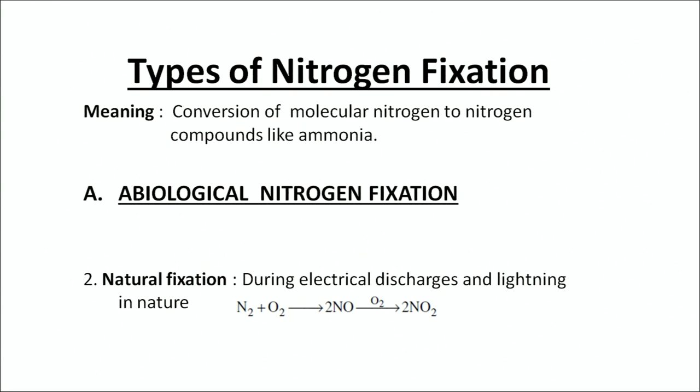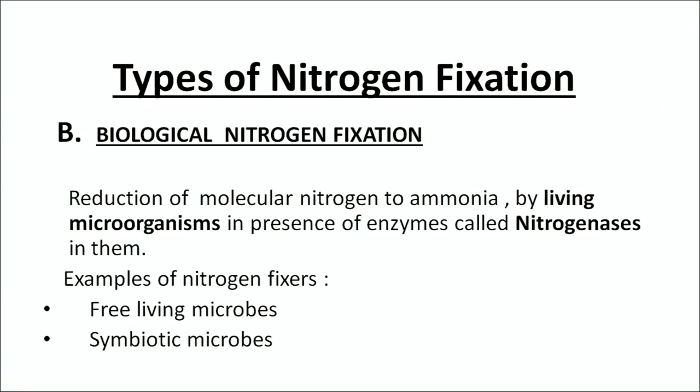As the equation shows, nitrogen combines with oxygen to form different nitrogen oxides in the atmosphere. The second chief type is biological nitrogen fixation. It is called biological because it involves the role of living organisms, and these organisms have nitrogenase enzymes in them. Examples of nitrogen fixers include free-living microbes as well as symbiotic microbes.